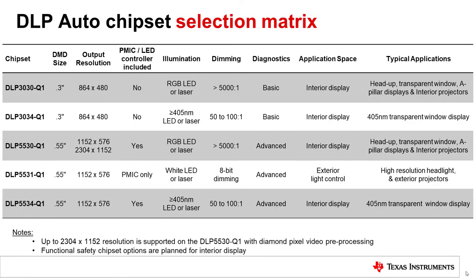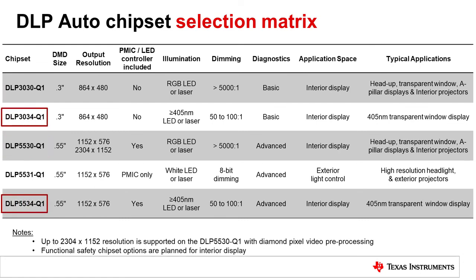This table lists the automotive chip sets and some of their key differentiating features. The first set of highlighted chip sets support red, green, and blue based LED or laser illuminated transparent displays. The second set of highlighted chip sets support 405 nanometer illuminated transparent displays.